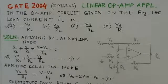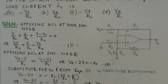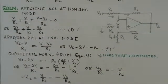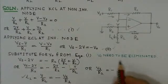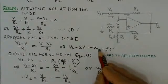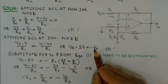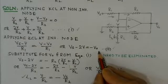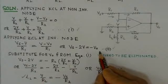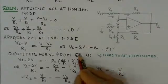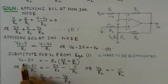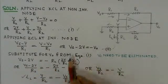What we observe in this equation is that V0 is not of much significance to us. We don't have to find the output voltage, so we will try to eliminate the value of V0 from this equation. We substitute the value of V0 into the second equation.